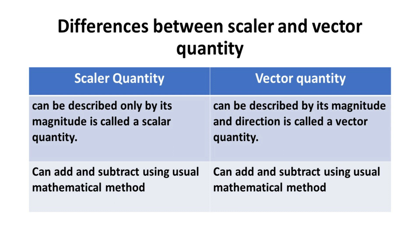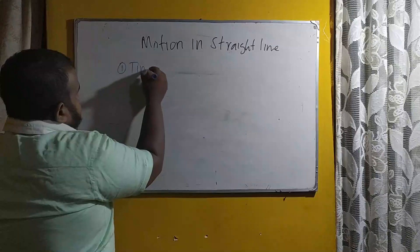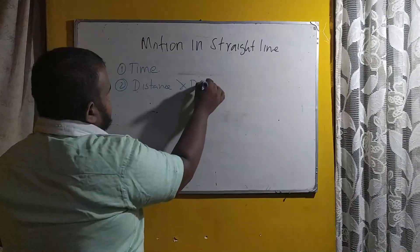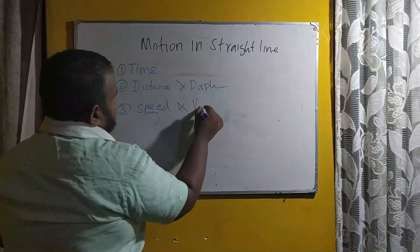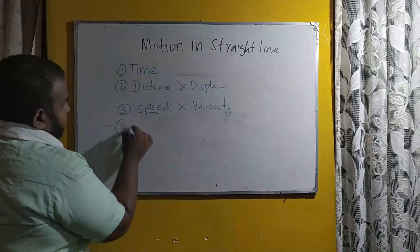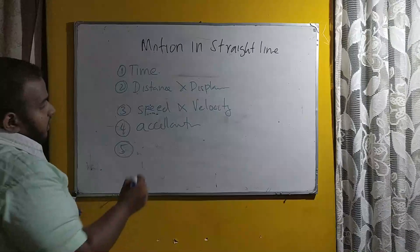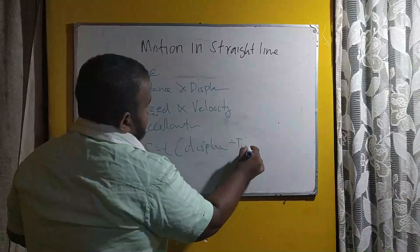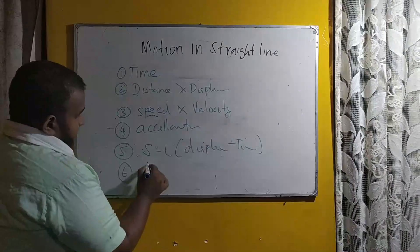Let's go back to the initial point. The quantities are what we are going to study in this unit. In this unit, we will be studying the following topics: first, time; second, distance and displacement; third, speed and velocity; fourth, acceleration; fifth, the displacement-time graph (S-T graph); and sixth, the velocity-time graph.